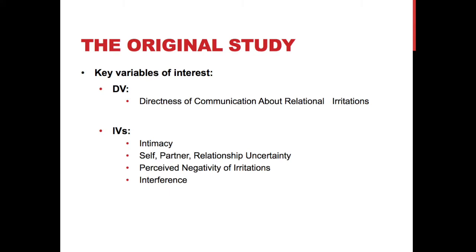They also dealt with self, partner, and relationship uncertainty. Self-uncertainty regards how I feel about my role in a given relationship — am I committed, do I love my partner? Partner uncertainty is the opposite: how I believe my partner feels, how committed they are, do they love me? Relationship uncertainty is the uncertainty we have about the relationship as a unit as a whole, rather than just about one of its members. This is key for dyadic data collection because we're dealing with self, partner, and relationship.